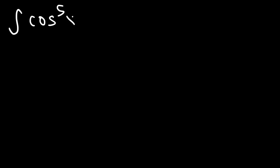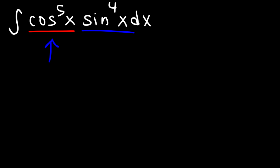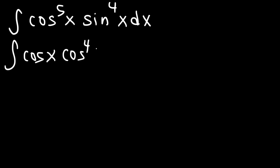Here's another problem: let's find the integral of cosine to the fifth power times sine to the fourth power. It's somewhat similar to the last problem but a little bit longer. Notice that the trig function cosine is raised to an odd power, and the sine function is raised to an even power. We want to focus on cosine because it's raised to an odd power — we can split cosine to the fifth power into cosine x times cosine to the fourth power. The even portion we can convert into sine, which will help when we use u substitution.